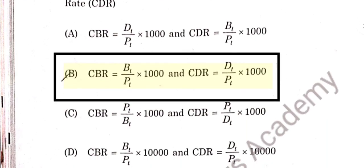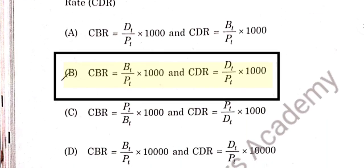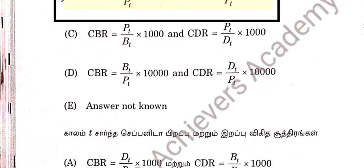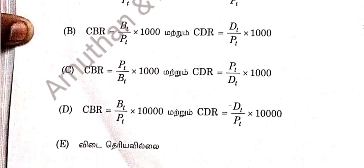Question 55: CPR and CDR — Crude Birth Rate and Crude Death Rate. The formula is Pt divided by Pt into 1000 for DT, and BT by PT into 1000 for births. 55 option B is correct.